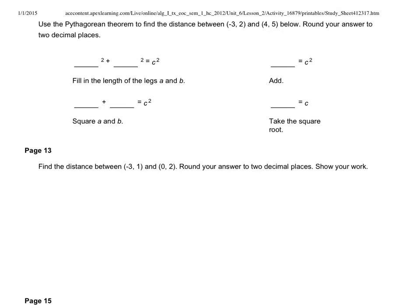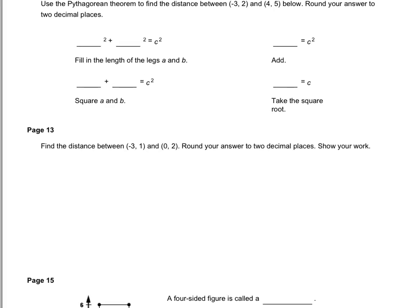So we're supposed to use the Pythagorean Theorem to find the distance between negative 3, 2, and 4, 5 below. Round your answers to two decimal places. So I'm going to draw this picture for us. I'm going to draw an x and a y-axis. So we're going to go to negative 3 and positive 2, which would be here, and positive 4, positive 5, which would be up here, and we're supposed to find the length of this segment. Well, in order to do that,